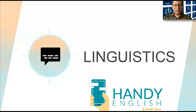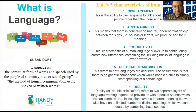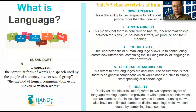Firstly, linguistics. Linguistics is the study of how humans use languages — spoken and written languages. In our video, we're going to be concentrating on the English language. First of all, we need to define what language is. What you're seeing here on your slide is the definition by a linguist named Susan Dort. Susan Dort says that language is the particular form of words and speech used by the people of a country, area, or social group.